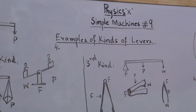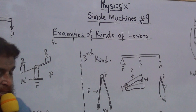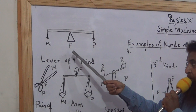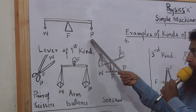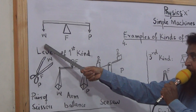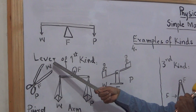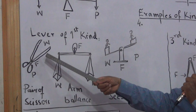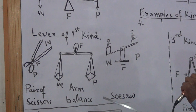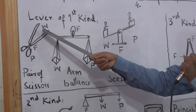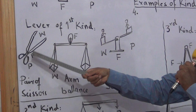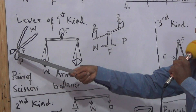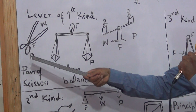The first kind of lever. This is the first kind of lever. The first example is the pair of scissors. This is the main thing you use in your home. Here we have a lever. Here is a fulcrum where you can move your hand, and here you can apply your effort.